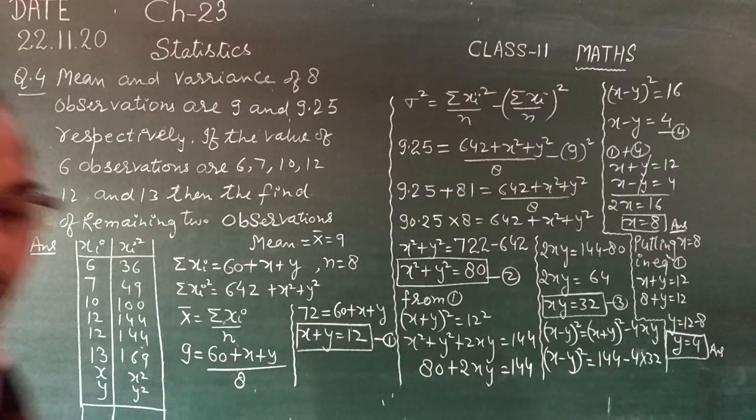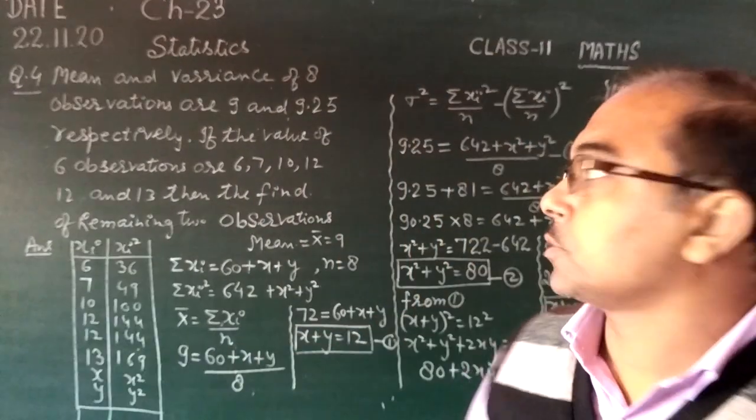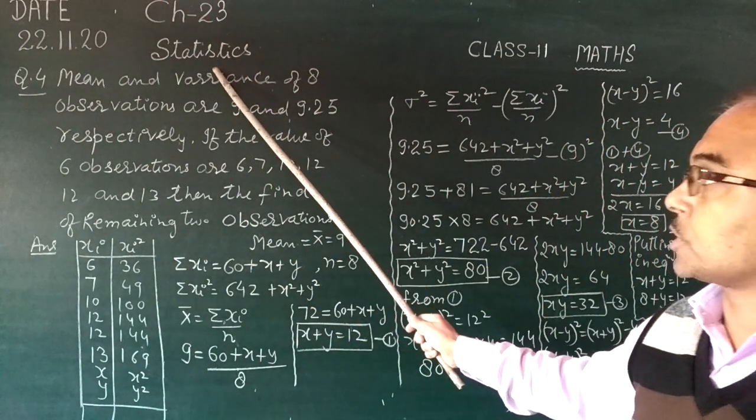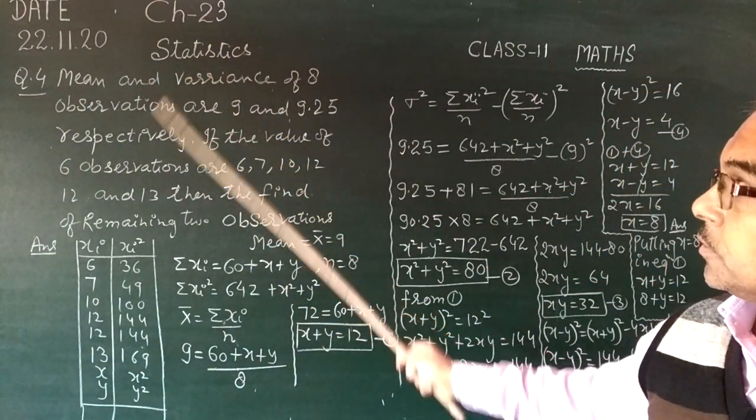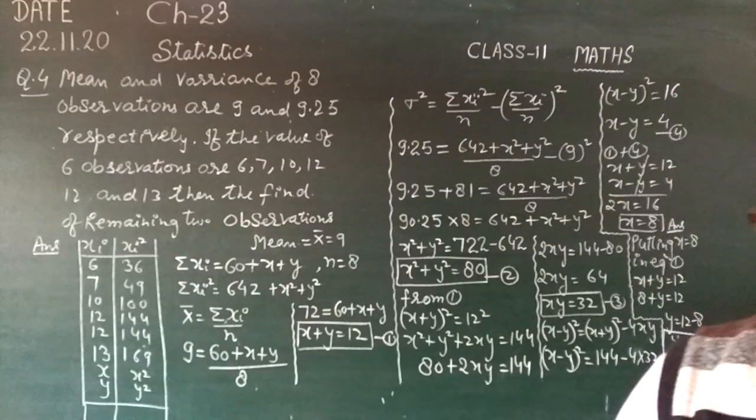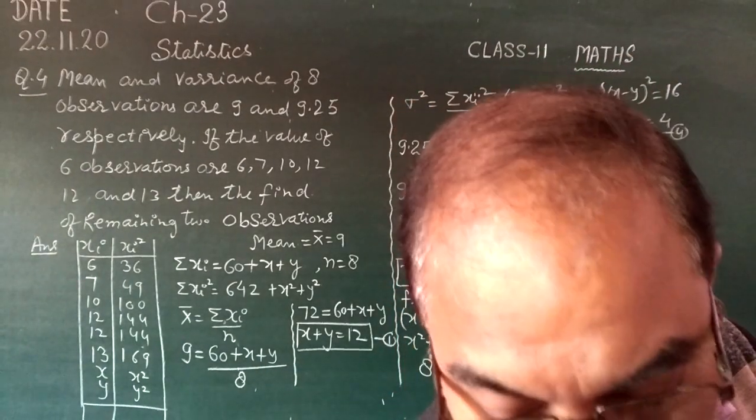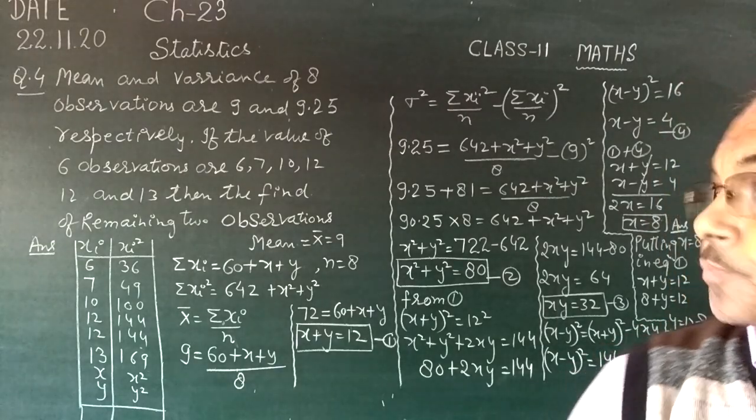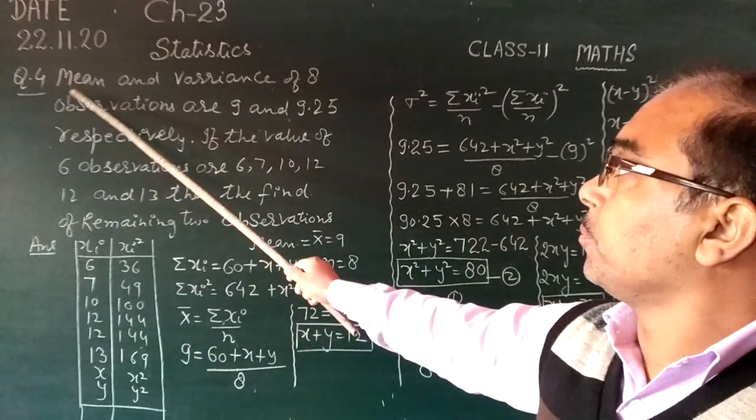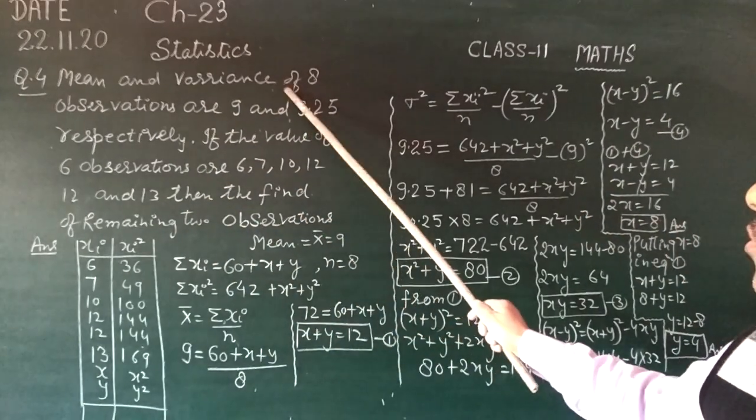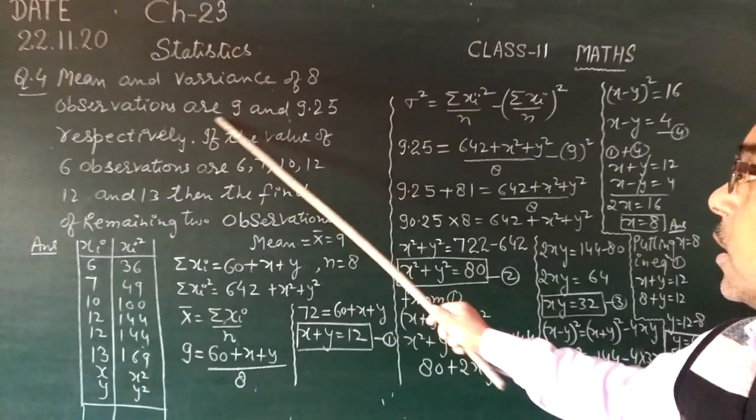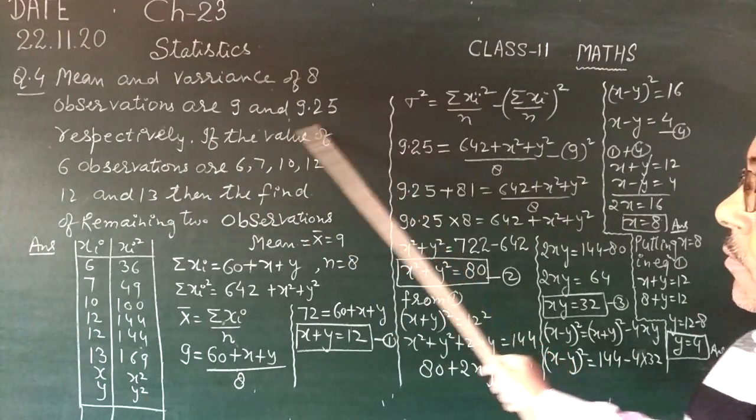Good morning students, class 11th chapter 23 in statistics exercise 23.3 A, question number 4. Mean and variance of 8 observations are 5 and 9.5 respectively.